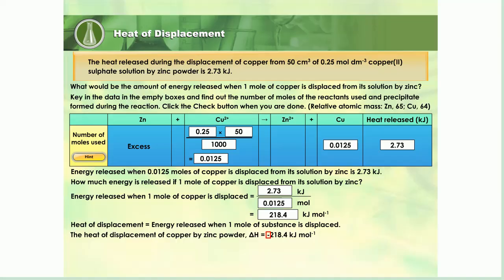The negative sign in front of the value indicates that heat is released. We can write the thermochemical equation for the displacement of copper from its solution by zinc like this.